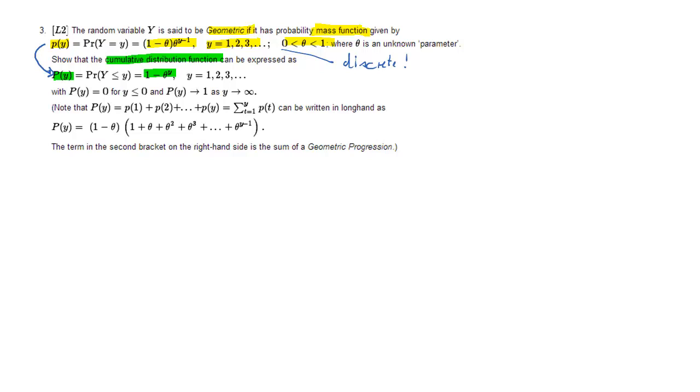We are asked to confirm that the cumulative distribution function is as given. So this is what we need to do. We need to link the mass function to the cumulative distribution function. Let's first just copy the mass function. The probability for a particular outcome y is 1 minus theta times theta to the power of y minus 1.